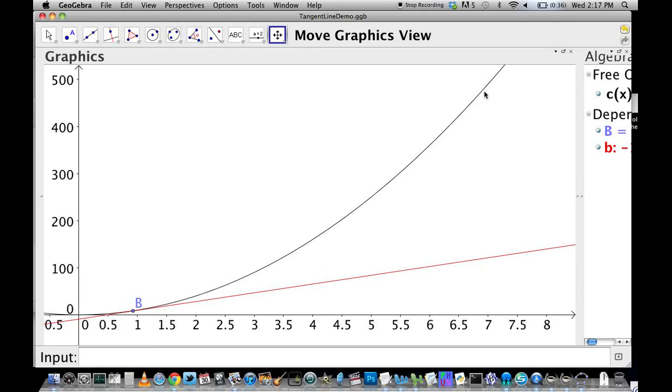But you can see that this black line represents something that is not traveling with a constant slope.